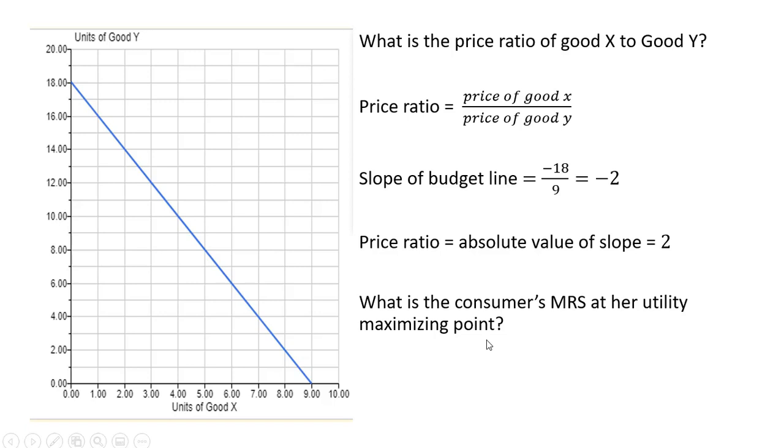The next question is, what is the consumer's marginal rate of substitution at her utility maximizing point? At her utility maximizing point, her indifference curve will be tangent to the budget line, implying that the marginal rate of substitution equals 2, the ratio of the prices.